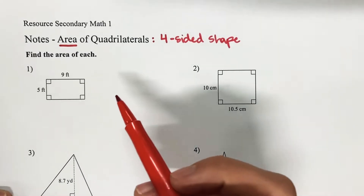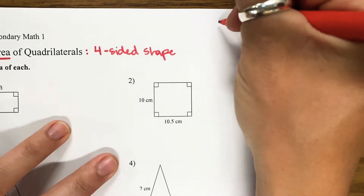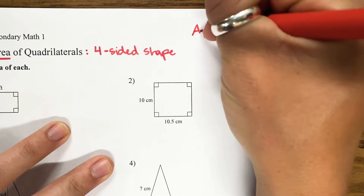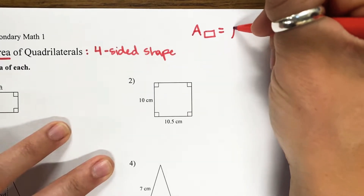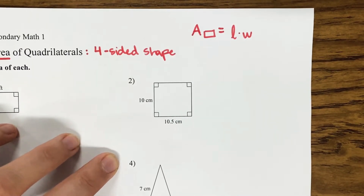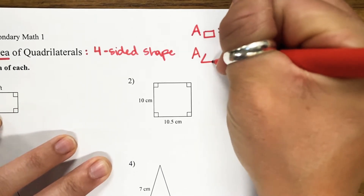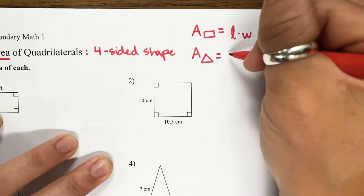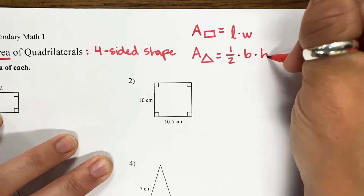Before we find the area of all of these shapes, let's go ahead and remind ourselves what area formulas we have learned. So last time we learned the area formula for a rectangle — we have length times width. Then we have our area of a triangle, and this is going to be one-half times base times height.